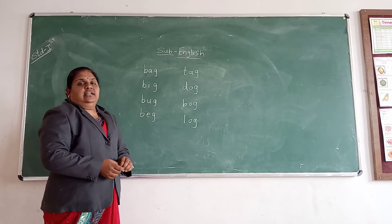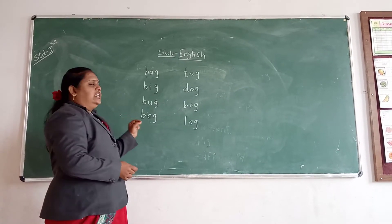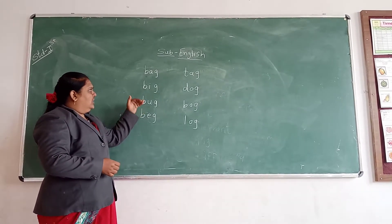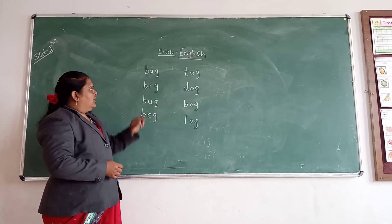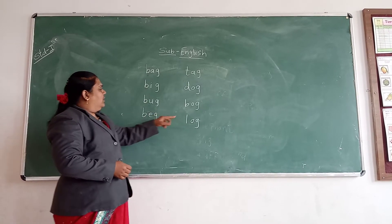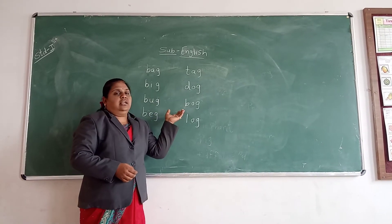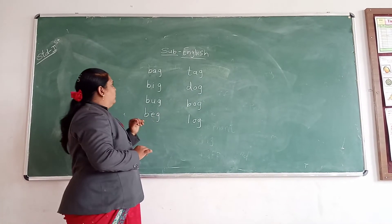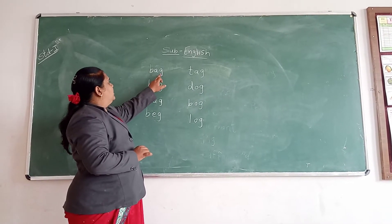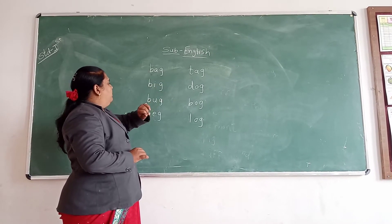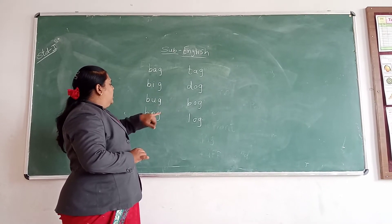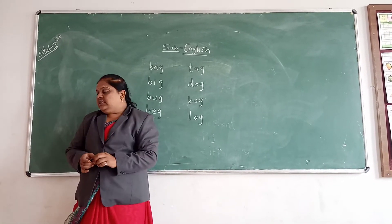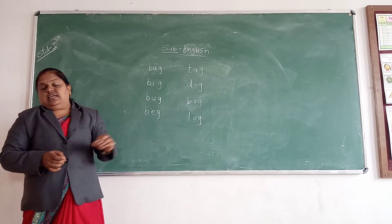So in this, we are seeing that B-letter words are first — B, B, B, B — these are B letters. Now we will read only B-letter words. Okay. B-A-G, bag. B-I-G, big. B-U-G, bug. B-E-G, beg. Okay, friends. Now we have done these letters.